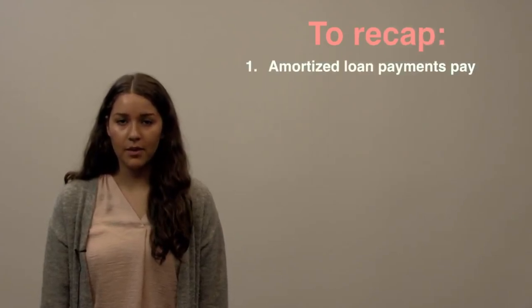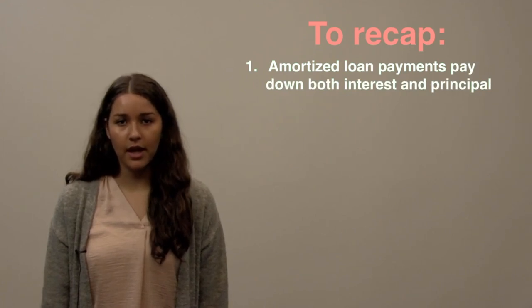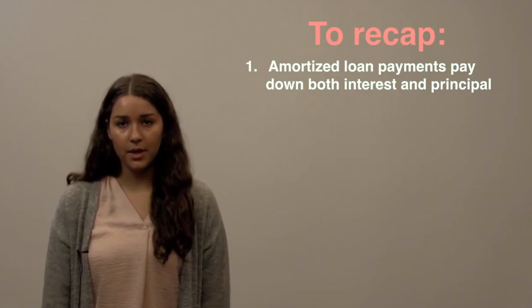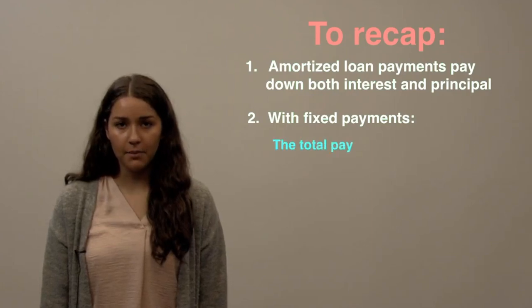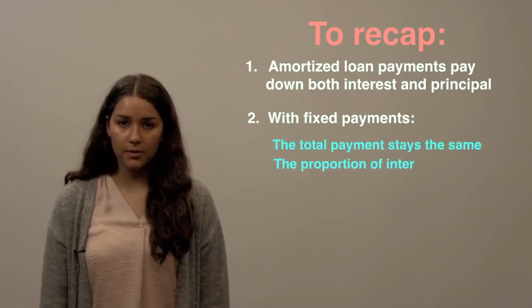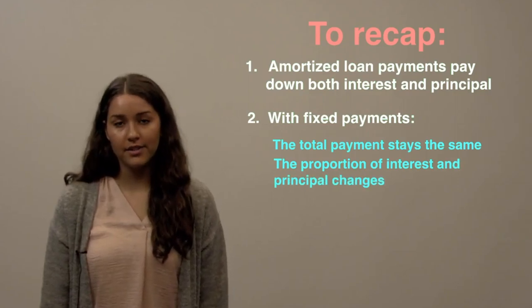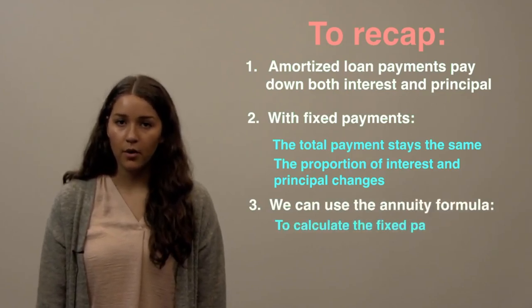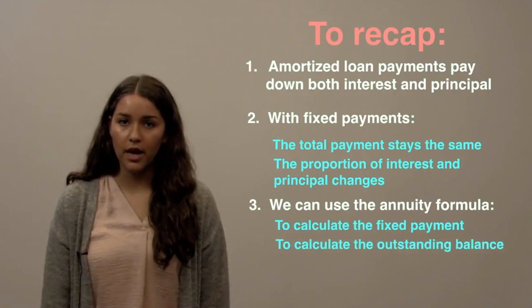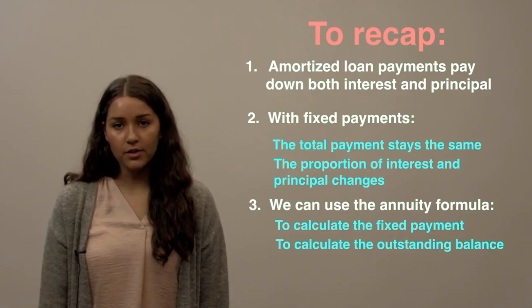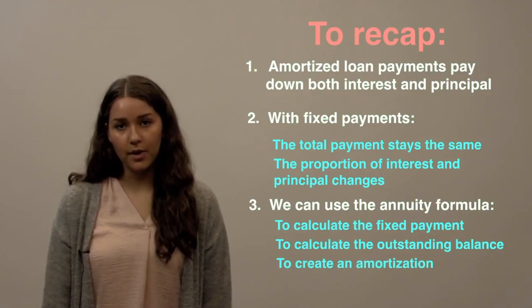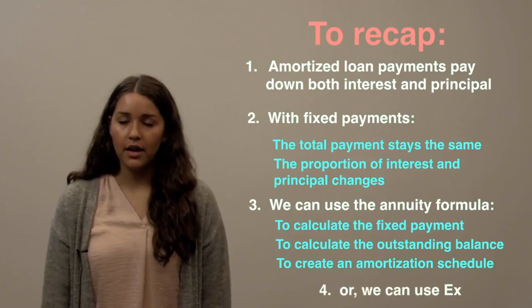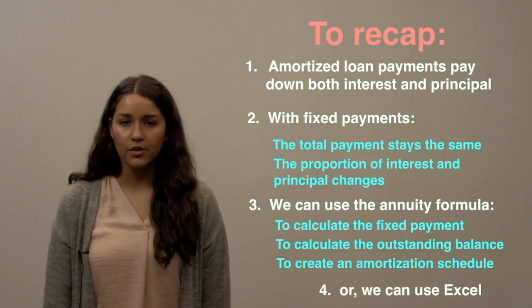Let's recap what we learned in this video. First, we reviewed that amortized loan payments contribute to both the interest amount and the principal amount throughout the lifetime of its loan. Then we learned about the second type of amortized loan, the fixed payment loan — this means that the periodic payment remains the same, but the portion that contributes to interest and the portion that contributes to the principal amount varies each period. We also learned that we can use the annuity formula to calculate the fixed payment of a loan, and we can use it to solve for the outstanding balance of a loan at a given point in time. We can also use the annuity formula to create an amortization schedule manually, or use Excel to create amortization schedules — usually for loans that are much longer and stretch over many periods. Thanks for watching and we'll see you next time!